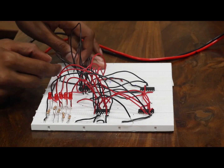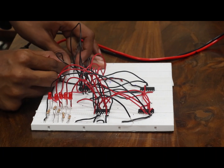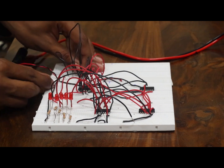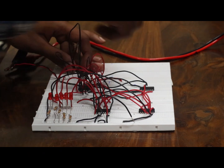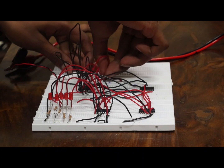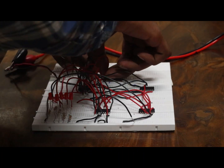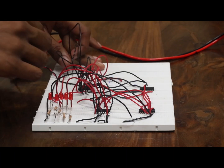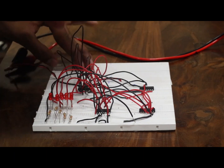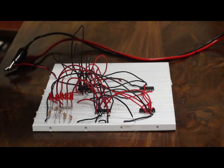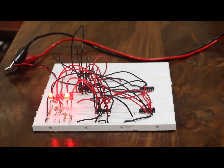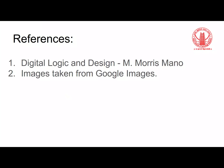Now I am going to change the inputs. In A I am giving 7, that is 0111, and in B I am giving 5, that is 0101. The output should be 12, that is 0001 0010 in BCD form. So the first and third lights should glow — and they glow. So it works correctly.